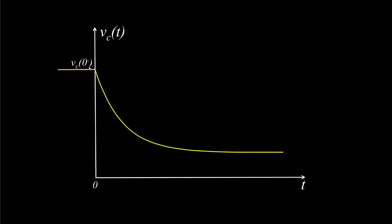Because the voltage across the capacitor is the integral of the current through the capacitor, the voltage across the capacitor cannot change instantaneously. This means that its value will be exactly the same immediately after the switch is moved as it was immediately before the switch is moved. To determine the value of the capacitor voltage at the time the switch is changed, we need to analyze the circuit when the switch is in its original position, noting that the capacitor will behave like an open circuit because all of the voltage and current sources are constant values.